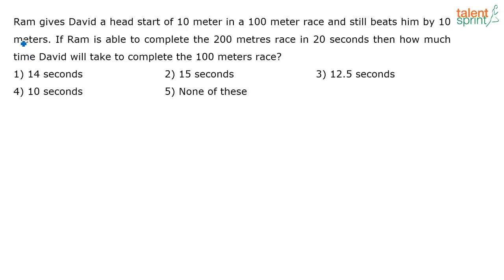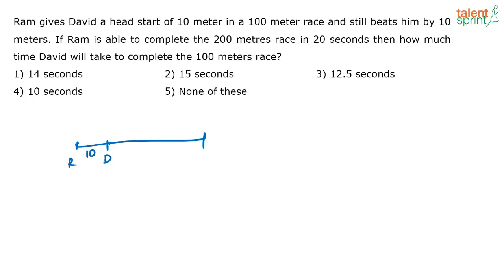A fairly easy one on races. What is given here? Ram gives David a head start of 10 meters in a 100 meter race and still beats him by 10 meters. So what does that mean? Ram and David are there. Ram is giving David a head start of 10 meters — that means David first completes 10 meters, then only Ram is starting. When Ram is starting, David has already completed 10 meters, but still Ram is beating David by 10 meters.